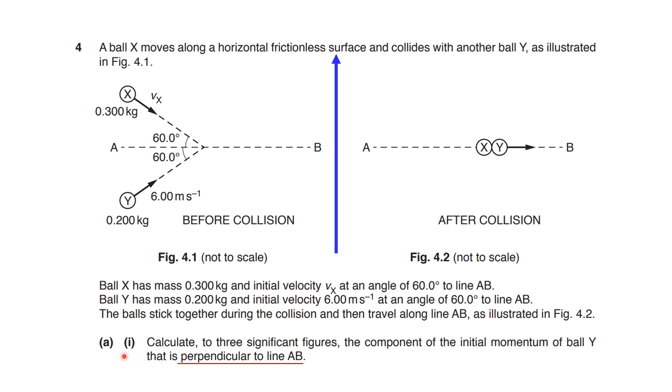So, let me read the first question, AI. Calculate to three significant figures the components of the initial momentum of ball Y that is perpendicular to the line AB. So, this first question is asking to calculate just the vertical momentum for the ball Y, which is perpendicular to this line AB.